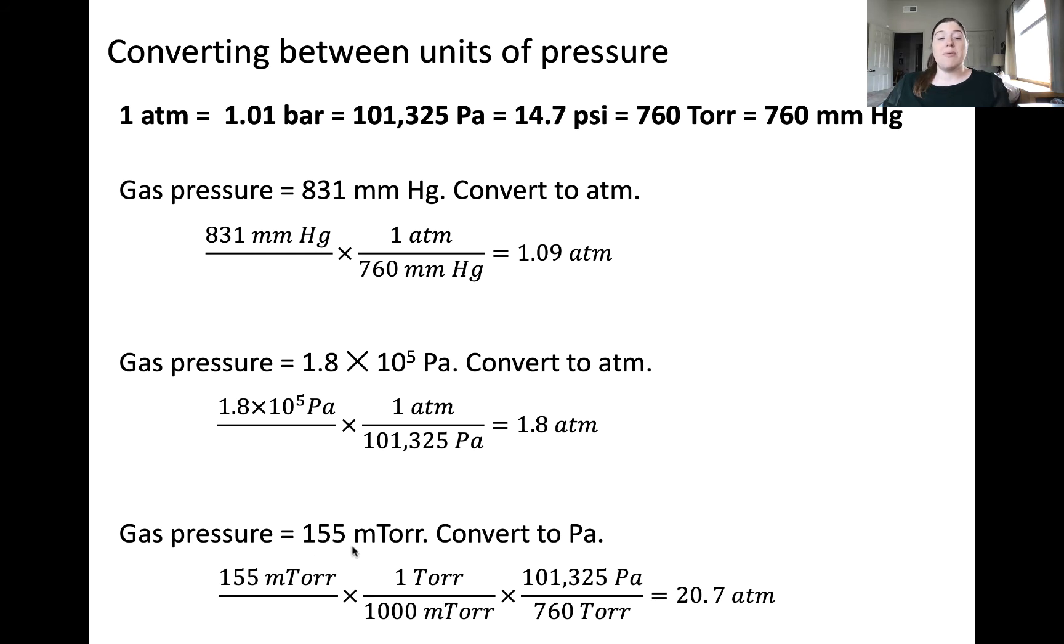Here's an example where we have a pressure given in millitorr. You'll notice that millitorr isn't stated on this conversion, this series of conversion equalities. Now, millitorr is a version of the unit torr, specifically with the metric prefix milli. We can apply metric prefixes to any pressure units. So we know that there are 1,000 millitorr per 1 torr.